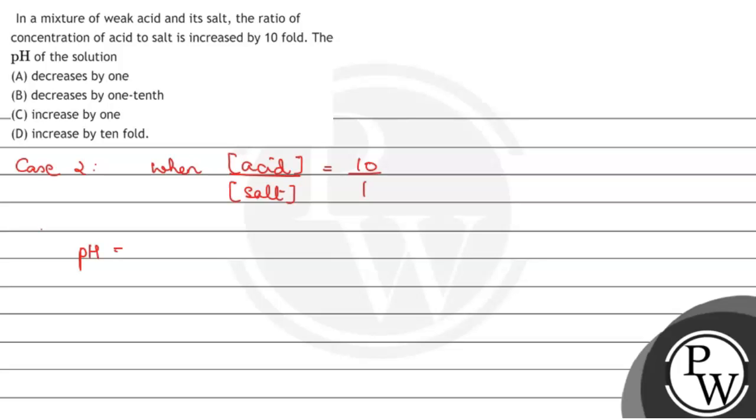it will be pH equals to pKa plus log. So in the equation we write salt in the numerator and acid in the denominator. But here, acid to salt ratio is 10 is to 1 provided.